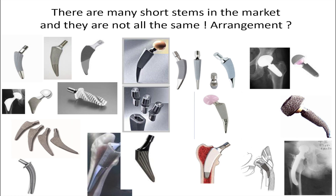If we talk about short stems at all, we see very often pictures like that with a high range of different types of prosthesis, but if we focus on that, we can see that there's not really a systematic arrangement.